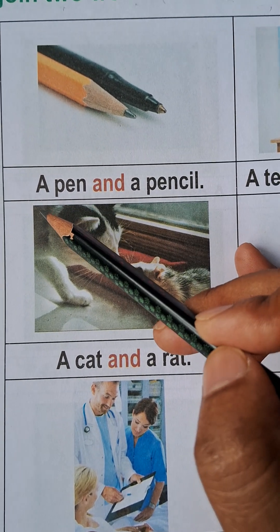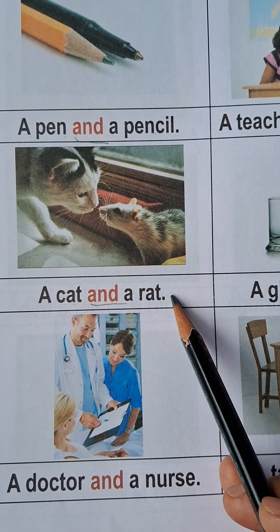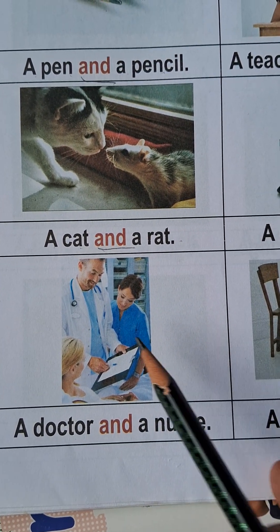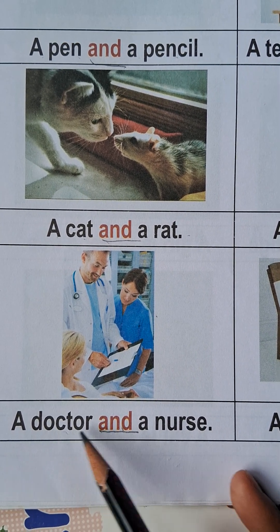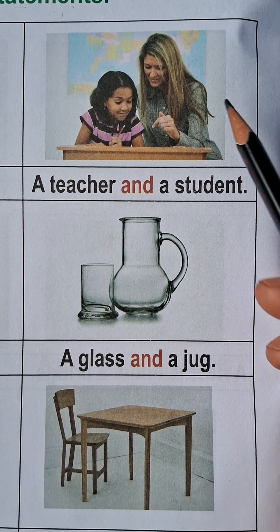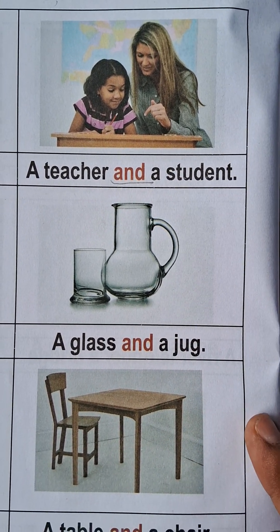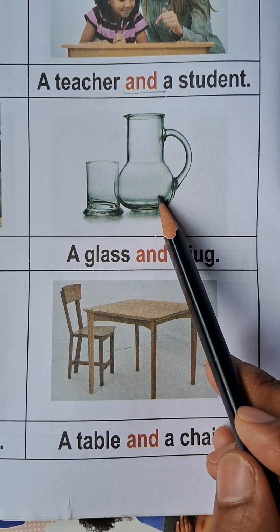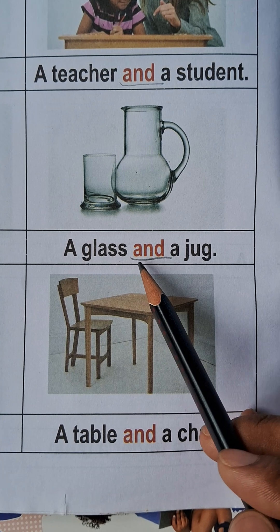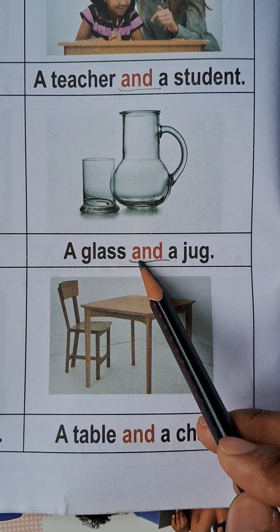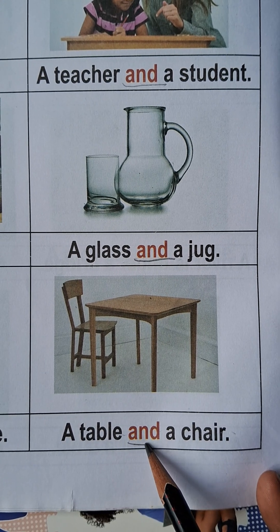So we will say: a pen and a pencil. A cat and a rat — a billi and a chuha. A doctor and a nurse. In this picture, a teacher and a student. A glass and a jug — so we use 'and' to join two things. A table and a chair — so to join table and chair we also use 'and'.